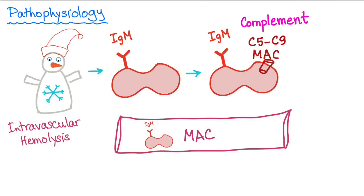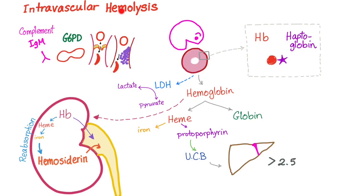The pathophysiology involves intravascular hemolysis due to avid complement fixation by the IgM antibody, proceeding to the final pathway C5 to C9, which is the Membrane Attack Complex (MAC). The MAC disrupts the osmotic environment of the red blood cell, causing lysis inside the blood vessel before reaching the spleen or other reticuloendothelial organs. This is intravascular hemolysis, caused by complement or IgM.